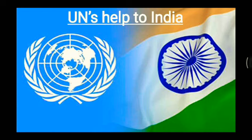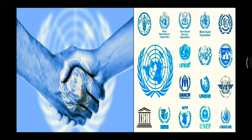Next we will discuss UN's help to India — how the UN has helped India in different ways. India has received much help from the UN through its different agencies like WHO (World Health Organization), the World Bank, FAO (Food and Agricultural Organization), UNICEF (United Nations Children's Fund), UNESCO, and ILO (International Labour Organization).